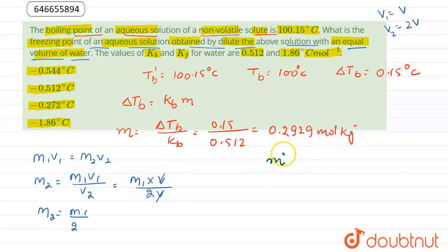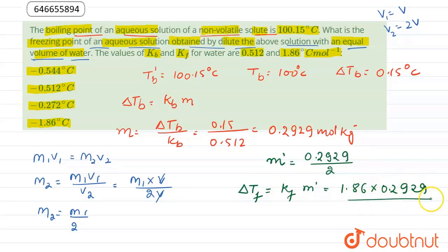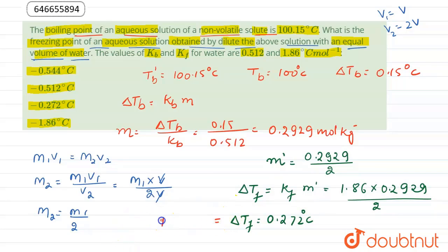The new molality m' = 0.2929 / 2. Using this molality we calculate ΔTf: ΔTf = Kf × m' = 1.86 × (0.2929 / 2), and here we get ΔTf = 0.272°C.